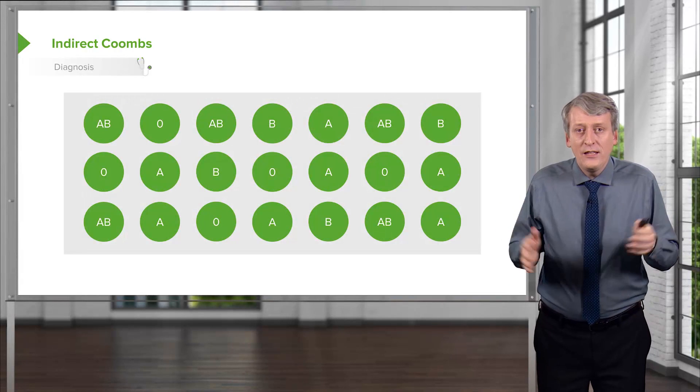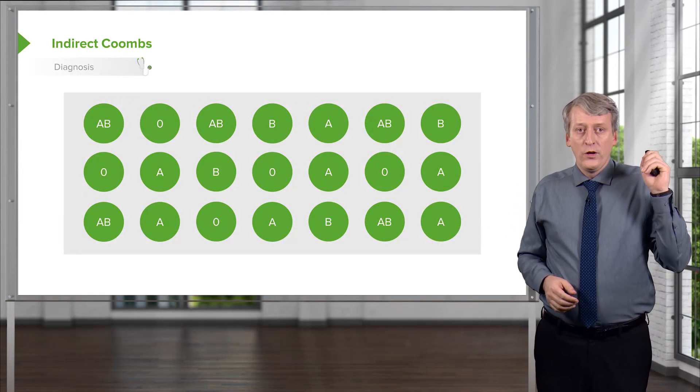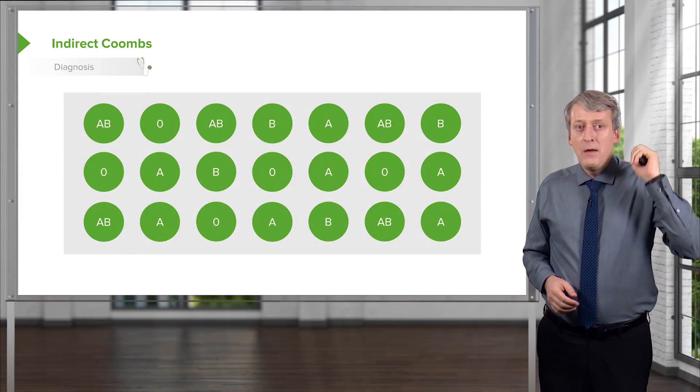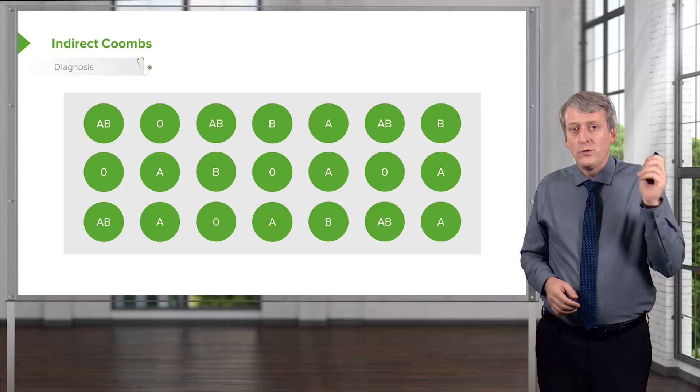Then what I do is I take these donors' blood and I put it in a dish. Here's the dish. I've got the first donor on the top left is an AB positive person. The next one is an O positive person. The next one is AB. The next one is B, etc.